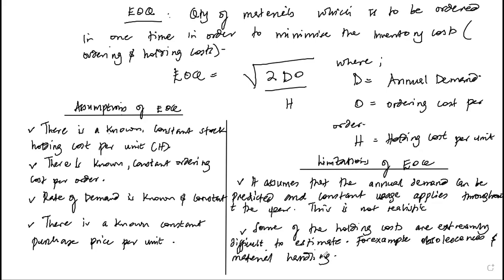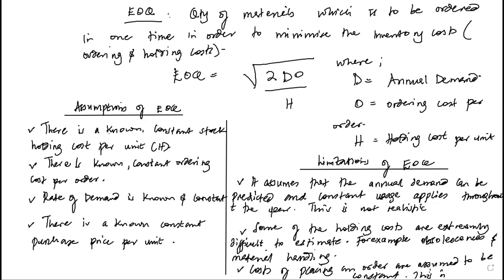The third limitation: the cost of placing an order is assumed to be constant, but those costs can never truly be constant. The costs can keep changing depending on the size of the orders. So it is not true to say that ordering costs per order are known and constant.